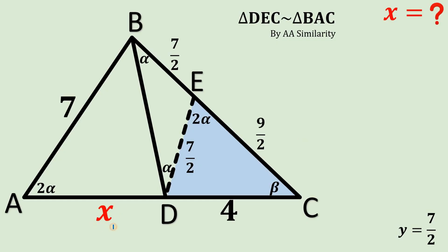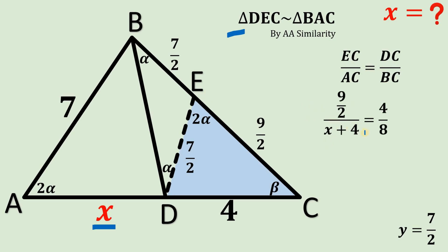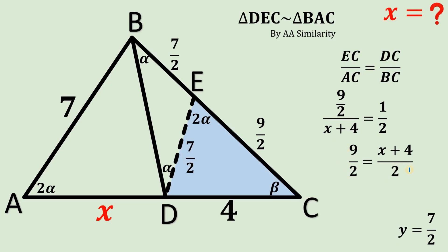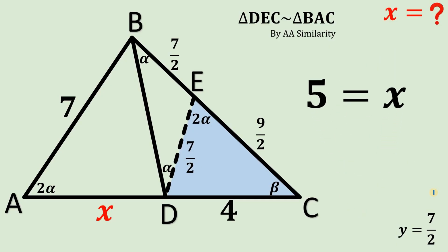Now we can solve for the length of segment x. Again using the two similar triangles, we can say that EC over AC equals DC over BC. Substituting the side lengths: nine over two, over x plus four, equals four over eight, which simplifies to one over two. To eliminate the denominator, multiply both sides by x plus four, then multiply the equation by two. Subtracting four from both sides, we get x equals five — which is our answer.